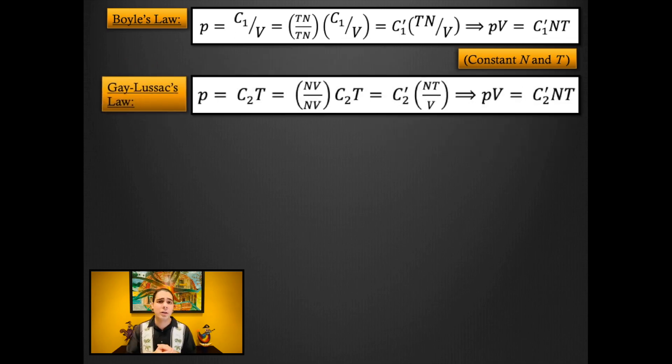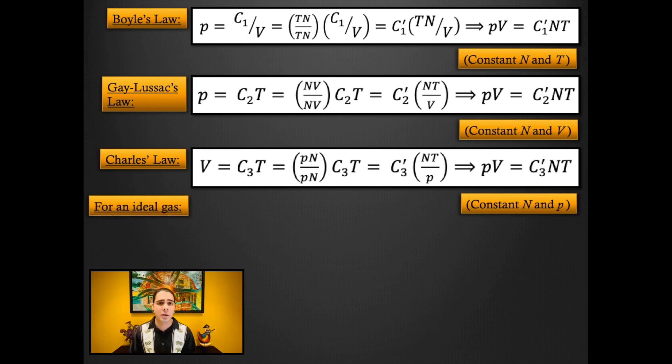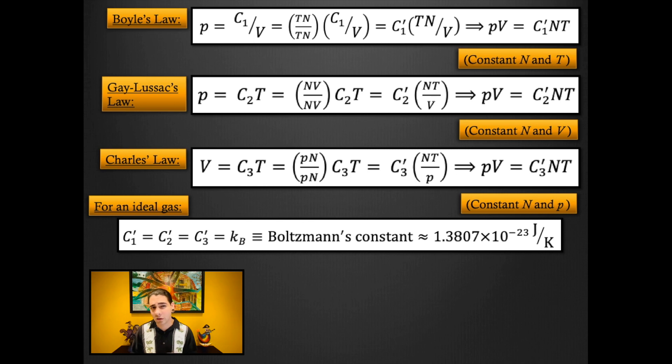And it turns out that we can do this for Gay-Lussac's law and also Charles' law. And for all three of those equations to be true, that must mean that C1 prime is equal to C2 prime which must equal C3 prime.